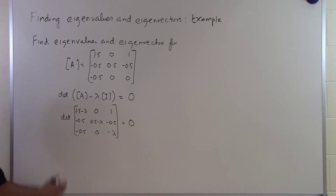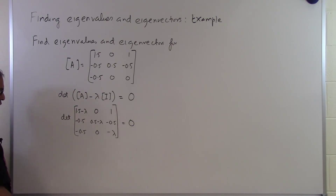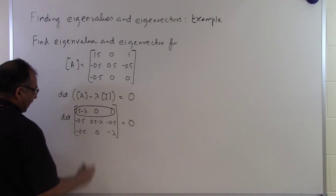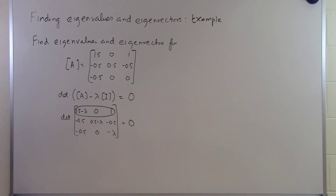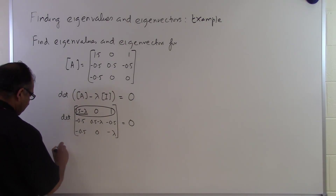I can find the determinant of this particular matrix by using several methods such as the forward elimination steps of Gauss elimination. I can use the cofactor method, and that's what I'm going to use here. So if I want to use the cofactor method, I'll take the first row for expansion. So I take the first row, first column, giving me 1.5 minus lambda.